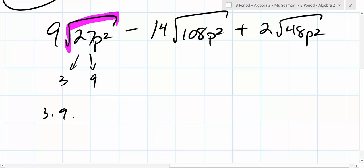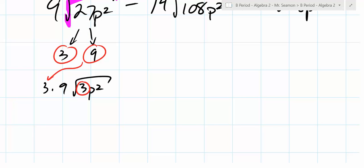3 times 9 times the square root of 3p². Because this 3 stays, right? And the p² stayed. But this 9, what did that 9 become? That 3. So we're not done quite yet because what's the square root of p²? p. So what do we end up with? 27p times the square root of 3.